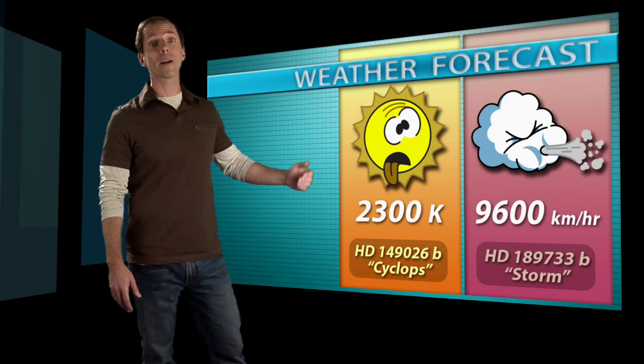These measurements are making astronomers the first interstellar weathermen. The 2007 record highs go to Cyclops, and the record winds were logged on Storm. But records seldom last, and exoplanetary weather is a young field.